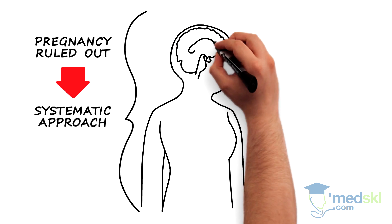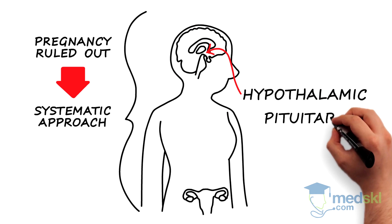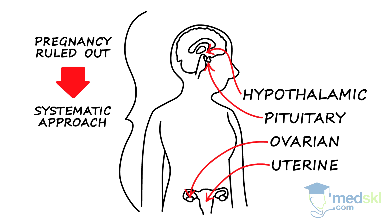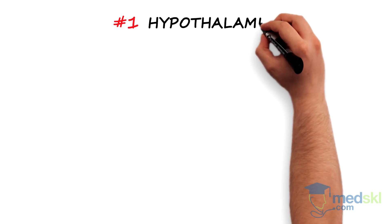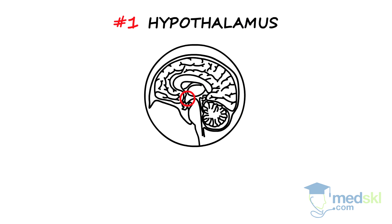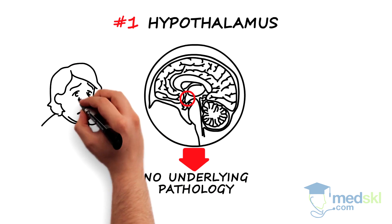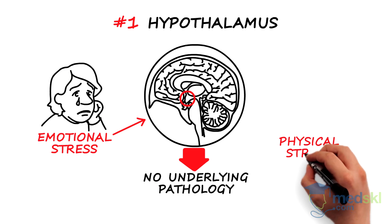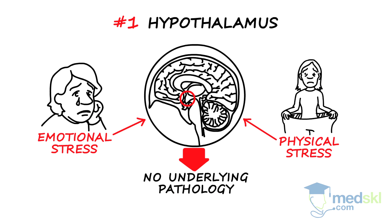Underlying etiologies can best be delineated by considering the hypothalamic-pituitary-ovarian-uterine axis. Number 1: Hypothalamus. Functional hypothalamic amenorrhea is a common cause of secondary amenorrhea. By definition, it implies that there is no underlying pathology. Common causes are emotional stress or physical stress, which can be associated with systemic disease or extreme weight loss.